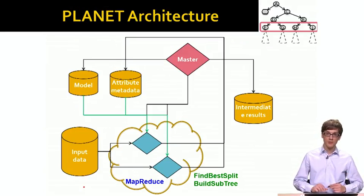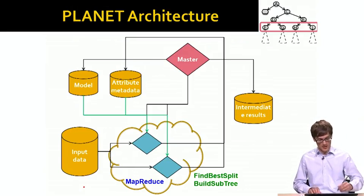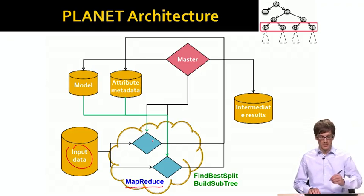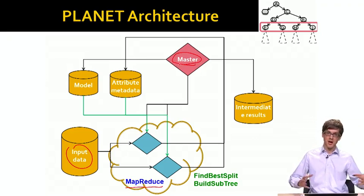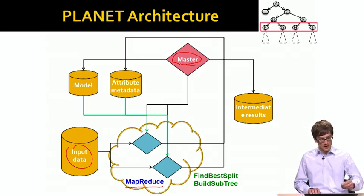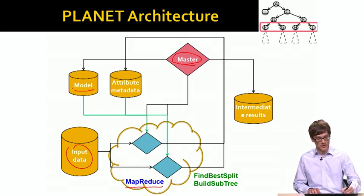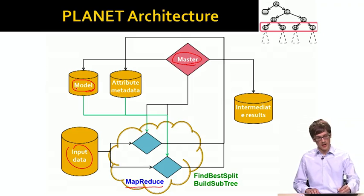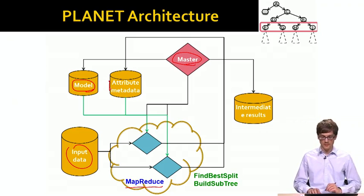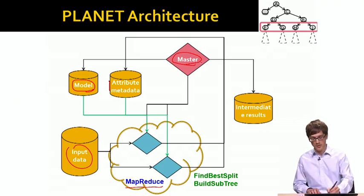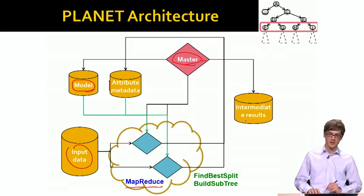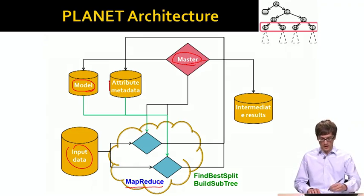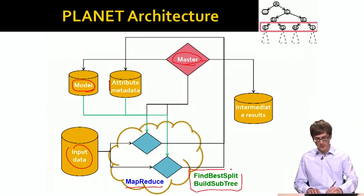Our overall system architecture will be something like this. We will want to have a sequence of MapReduce jobs that read the input data and process it. We will also have the master node that keeps track of everything. And we will also keep separately in the memory the model that we have built so far. We will keep some attribute metadata information and the master is also responsible for saving intermediate results.